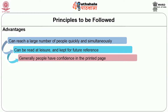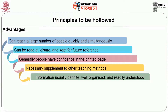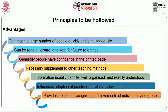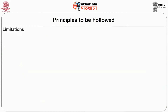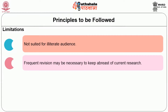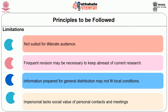The advantages of written communication are: it can reach a large number of people quickly and simultaneously; it can be read at leisure and kept for future reference; people generally have confidence in the printed page; and it is a necessary supplement to other teaching methods — at the end of meetings you can hand over the literature. Information should be definite, well organized, and readily understood. Extension publications influence adoption of practices at a relatively low cost, provide scope for recognizing achievements, and may promote literacy. Limitations include: not suited for illiterate audiences; frequent revision may be necessary; and it is impersonal and lacks the social value of personal contacts.